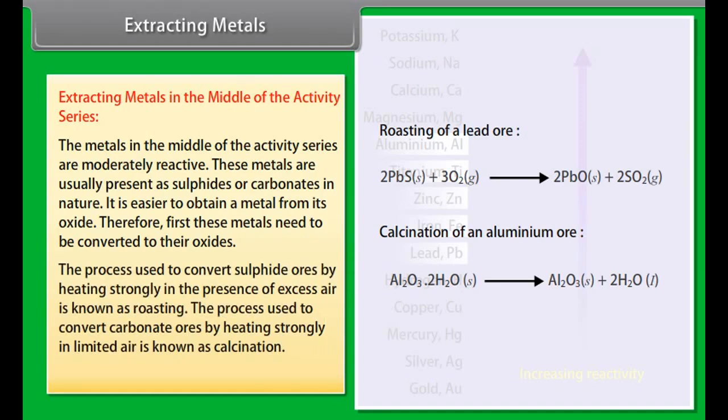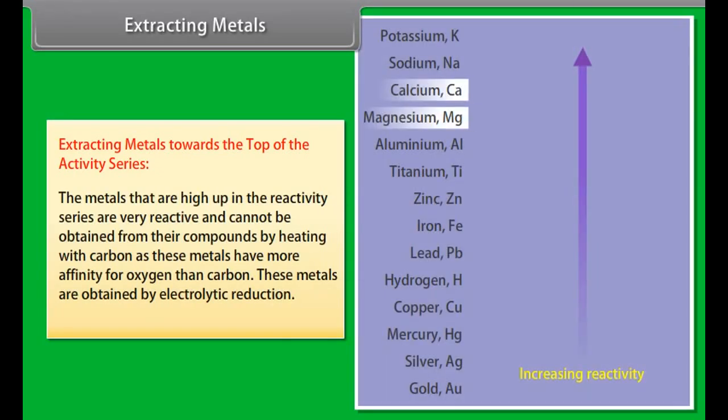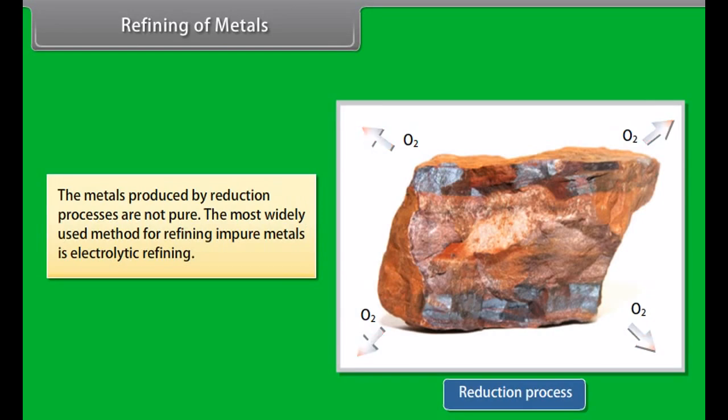Extracting metals in the middle of the activity series. The metals in the middle of the activity series are moderately reactive. These metals are usually present as sulphides or carbonates in nature. It is easier to obtain a metal from its oxide. Therefore, first these metals need to be converted to their oxides. The process used to convert sulphide ores by heating strongly in the presence of excess air is known as roasting. The process used to convert carbonate ores by heating strongly in limited air is known as calcination.